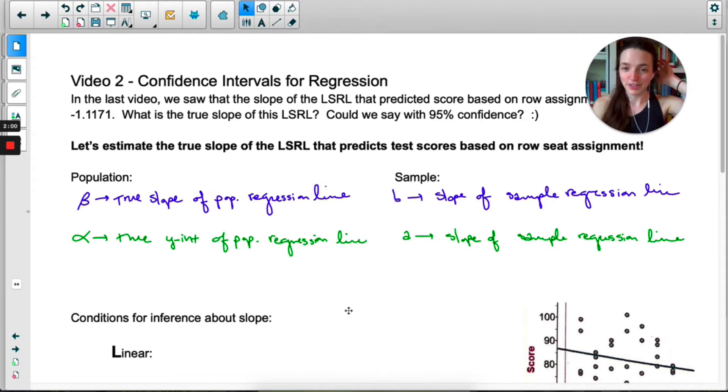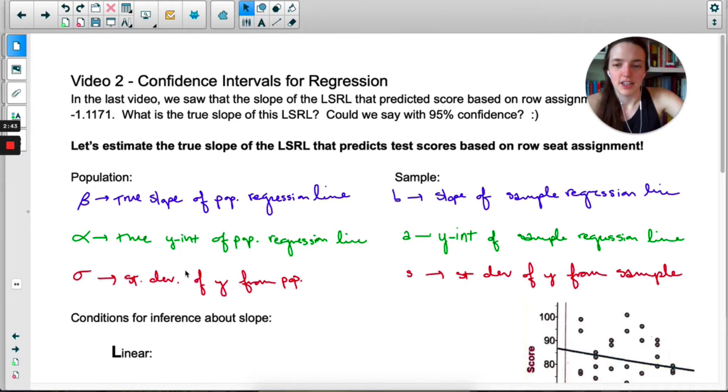We use alpha for the true y-intercept of the population regression line—never mind that alpha is already used as a significance level, I did not make the rules. Lowercase a is the y-intercept from the sample regression line. Finally, sigma is the standard deviation of y from the entire population, and s is the standard deviation of y from the sample.